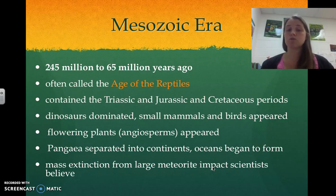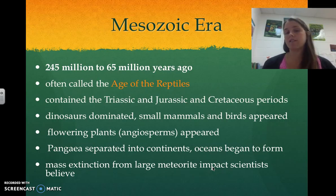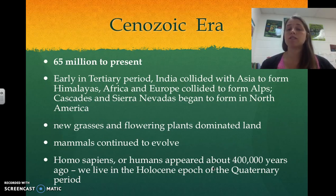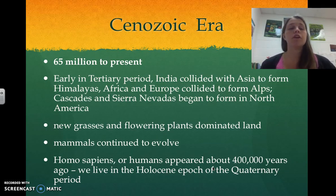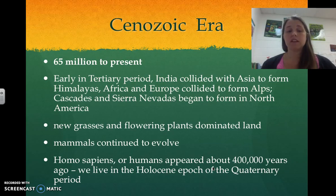Scientists believe a large meteorite impact is why the dinosaurs went extinct. There are a few other theories floating around, all based somewhat in scientific evidence, and it would be interesting to read up on them. After the Mesozoic Era, we went into the Cenozoic Era — 65 million years ago to currently. Early in the Tertiary Period, India collided with Asia to form the Himalayas, Africa and Europe collided to form the Alps, and the Cascades and Sierra Nevada began to form in North America. New grasses and flowering plants evolved and dominated the land. Mammals continued to thrive, and Homo sapiens began to evolve about 400,000 years ago. We currently live in the Holocene Epoch of the Quaternary Period.